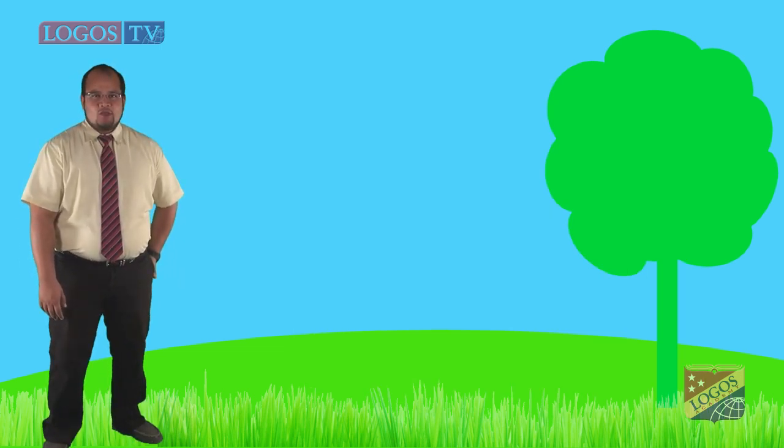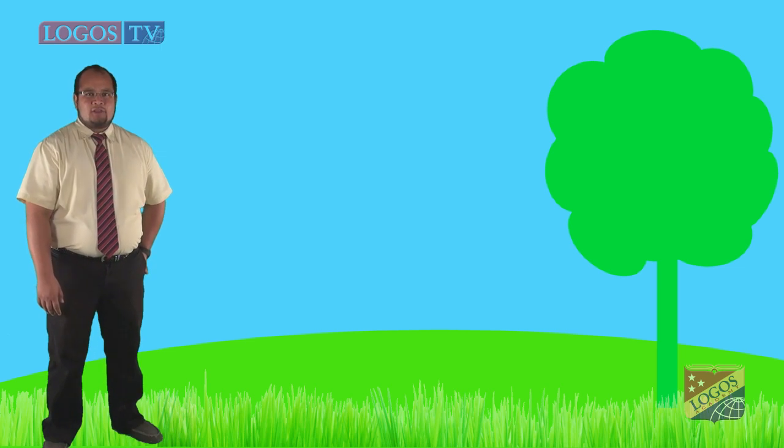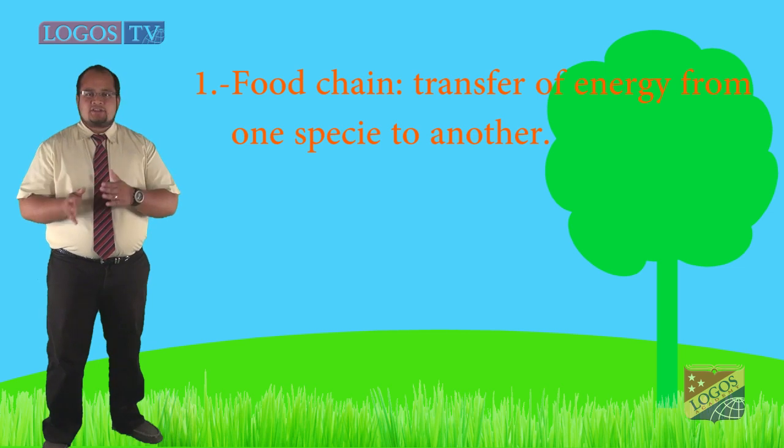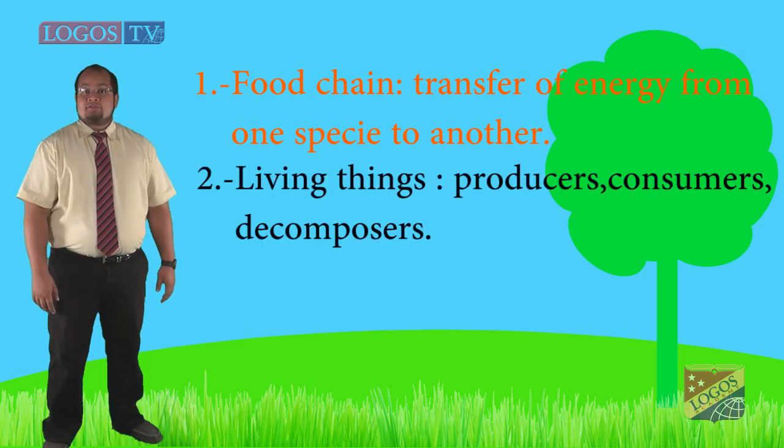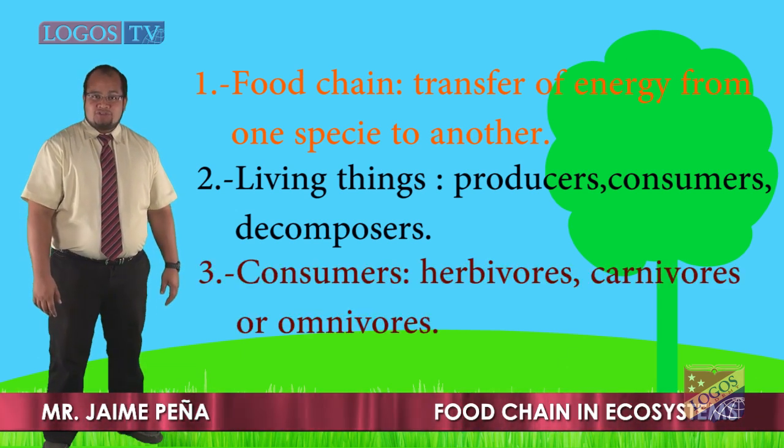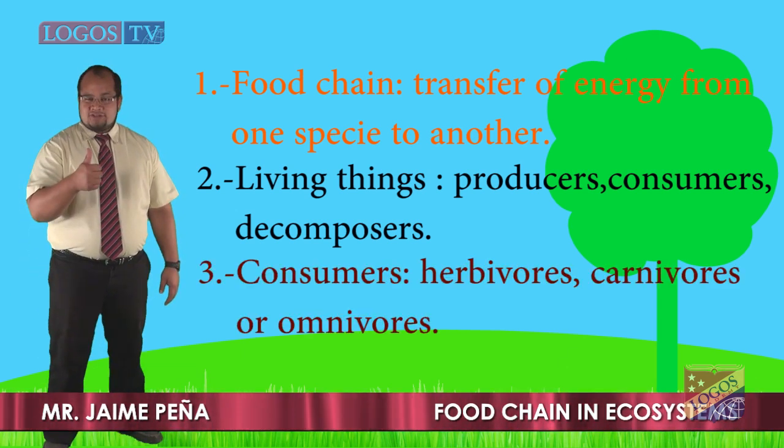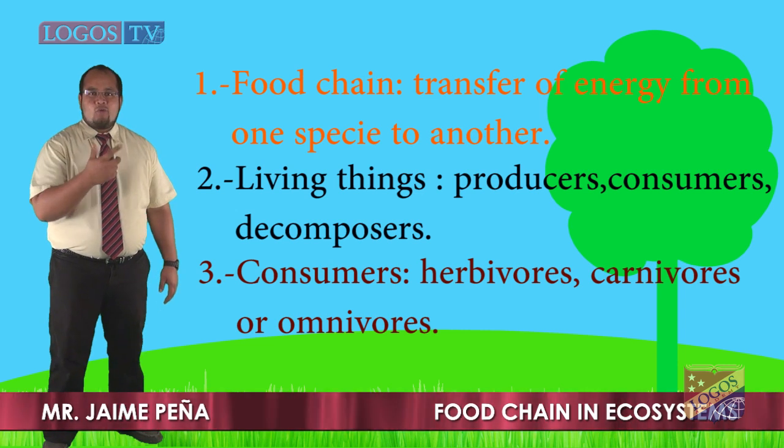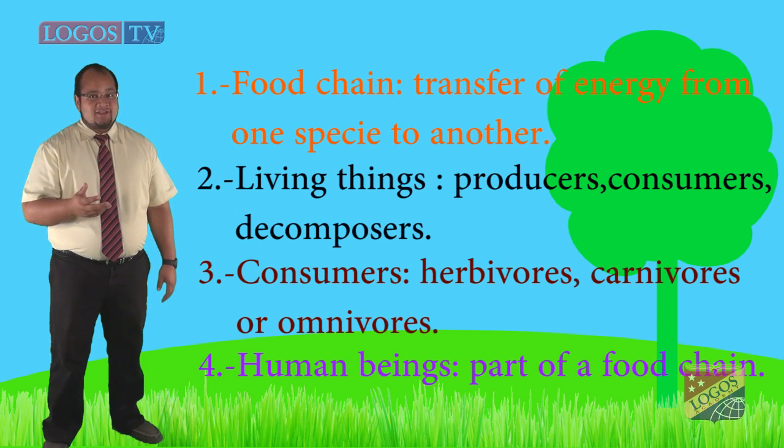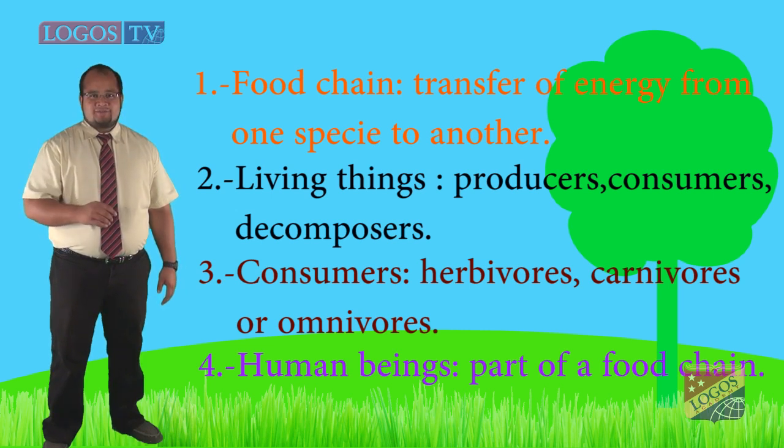Well kids, hope you liked this science class today. Remember what you learned: a food chain is the transfer of energy from one species to another. Living things are divided into producers, consumers, and decomposers. They are all part of the food chain. Consumers can be herbivores, carnivores, or omnivores depending on what they eat. Human beings are part of the food chain. Goodbye.